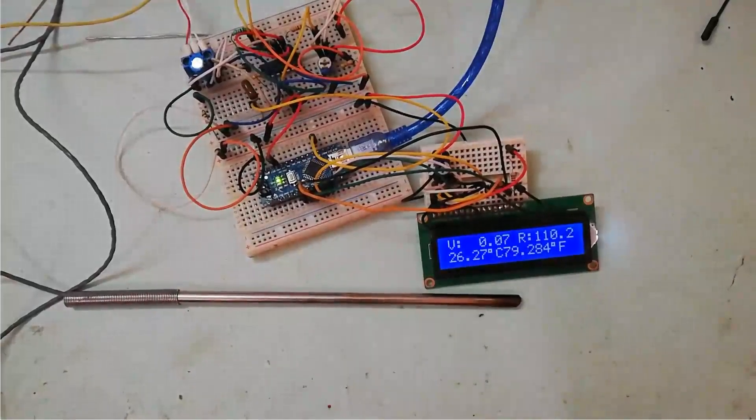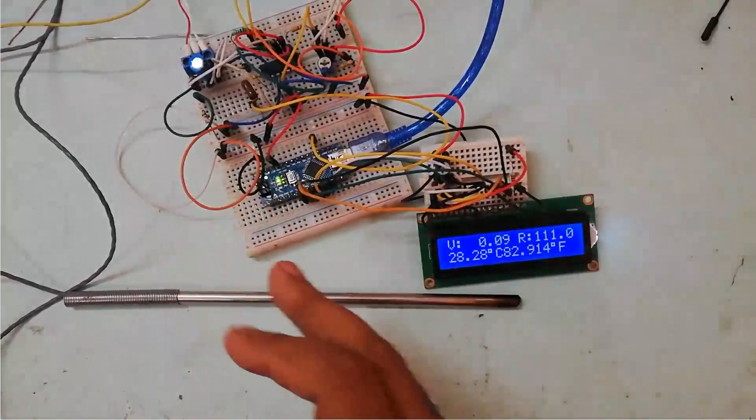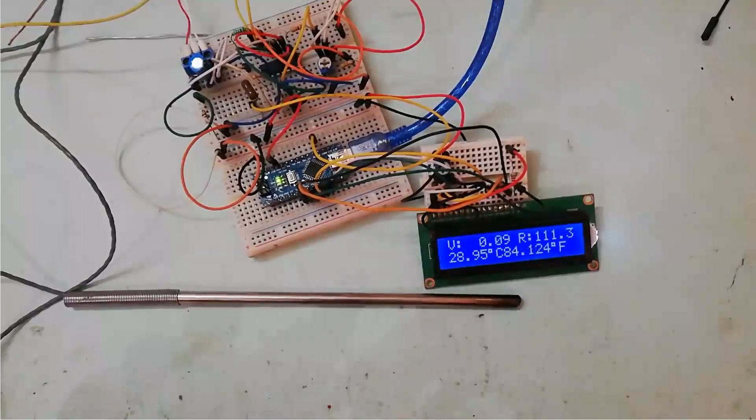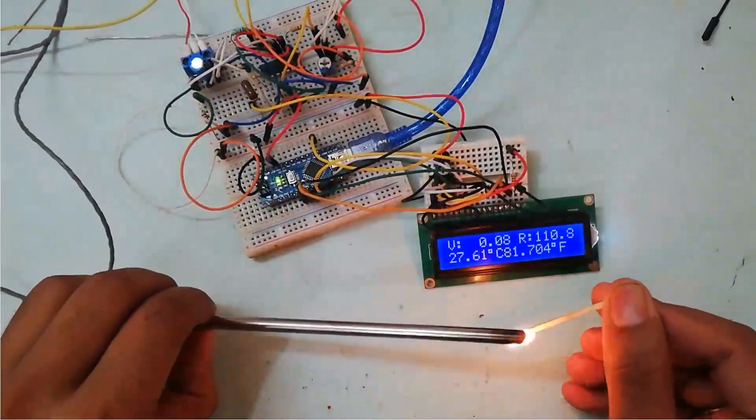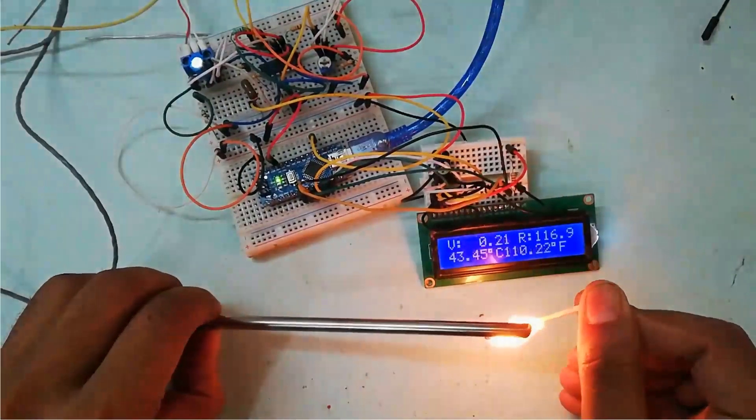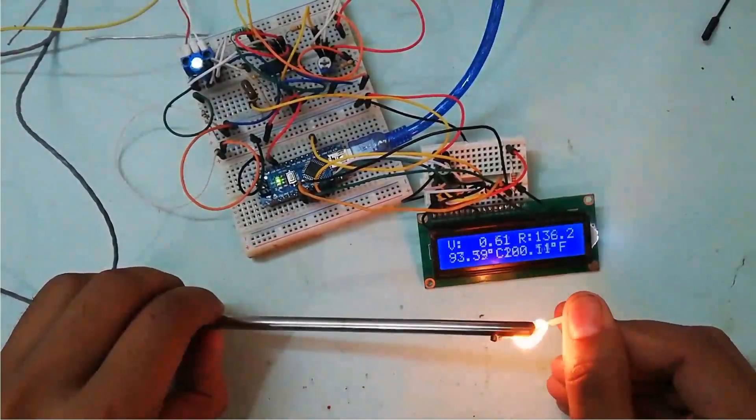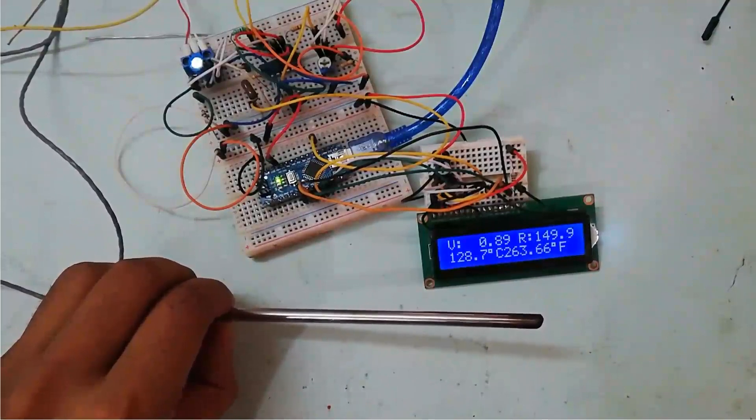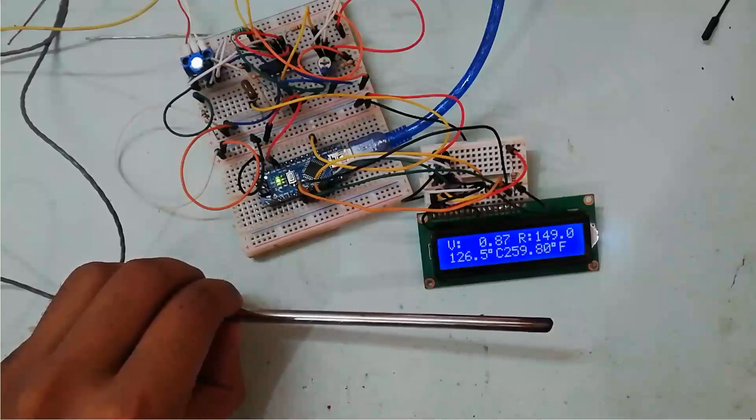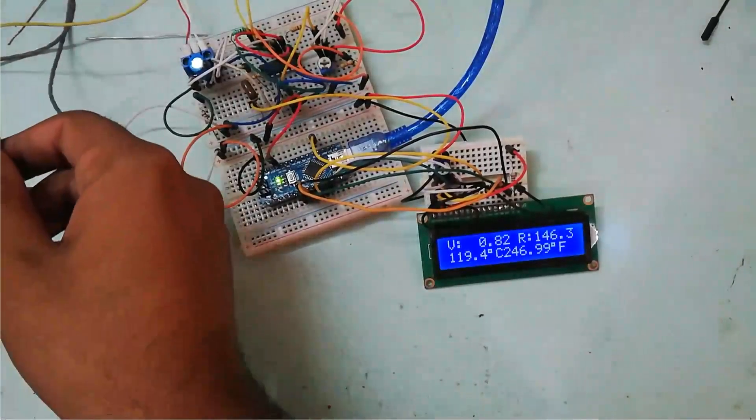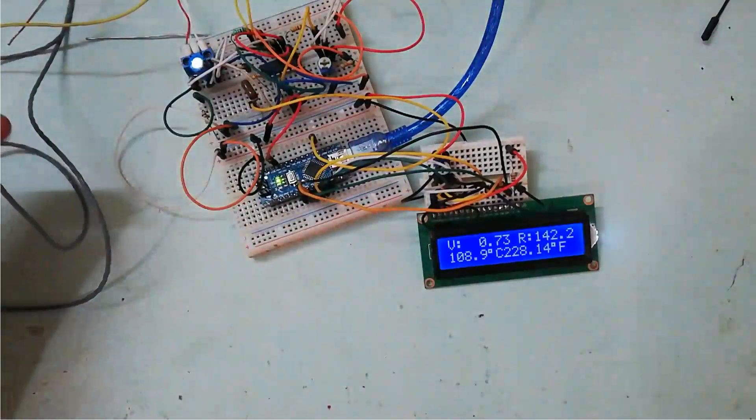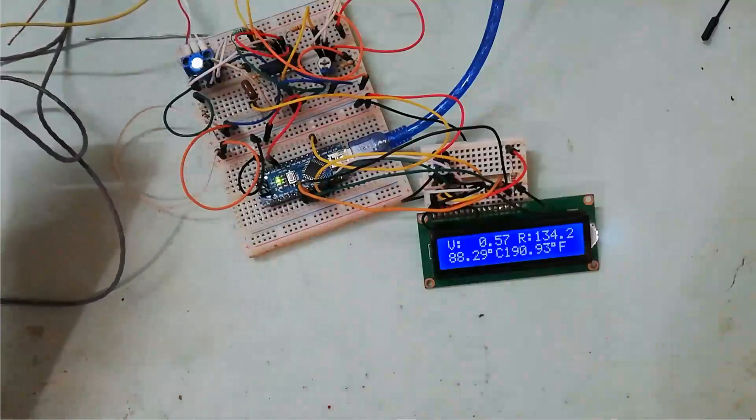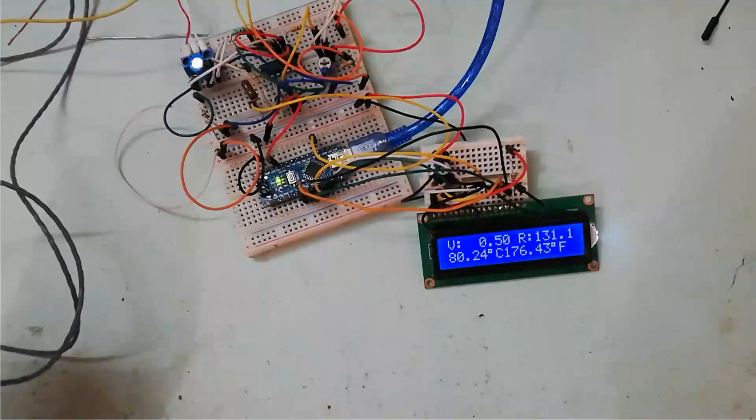Now let's see the output of the circuit. As you can see, our temperature is fluctuating. This is due to temporary connection. If you solder all components over a PCB, the output would be stable. Let's increase the temperature of this PT sensor. As you can see, the temperature is increasing drastically fast. In this way you can make your own temperature thermometer using PT100 and Arduino.